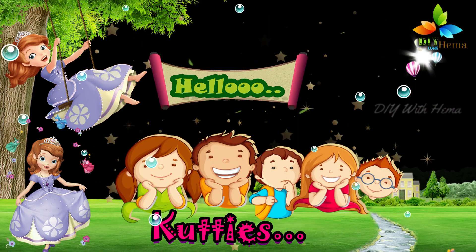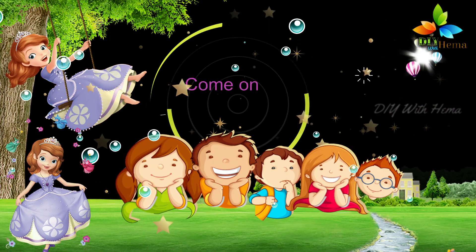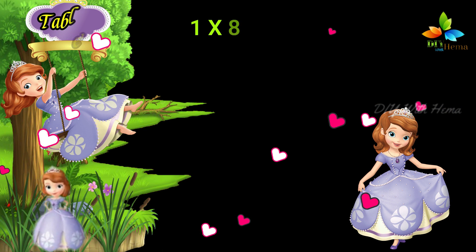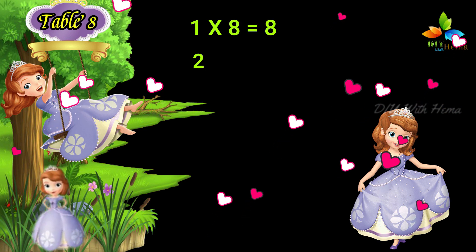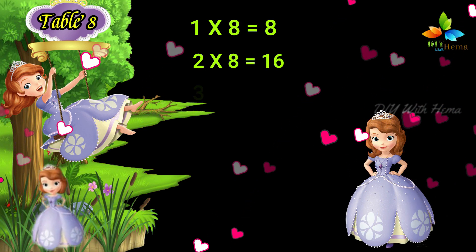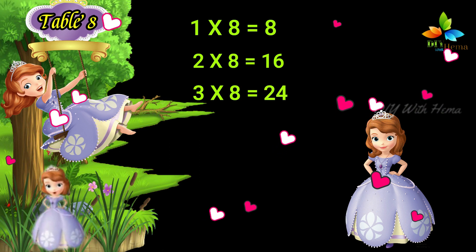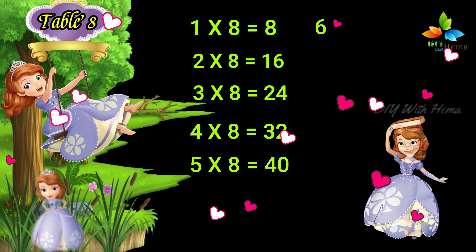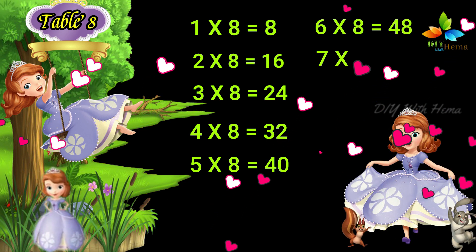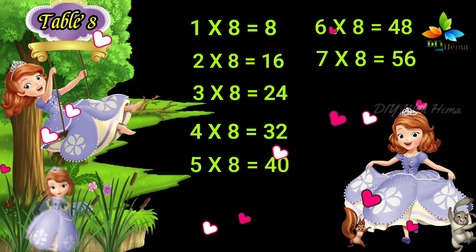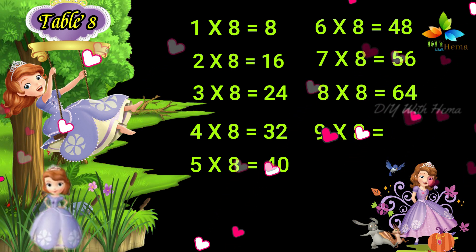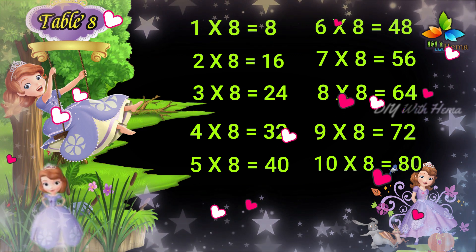Hello goodies. Shall we repeat? Come on, let us say. One, eight is eight. Two, eights are sixteen. Three, eights are twenty-four. Four, eights are thirty-two. Five, eights are forty. Six, eights are forty-eight. Seven, eights are fifty-six. Eight, eights are sixty-four. Nine, eights are seventy-two. Ten, eights are eighty.